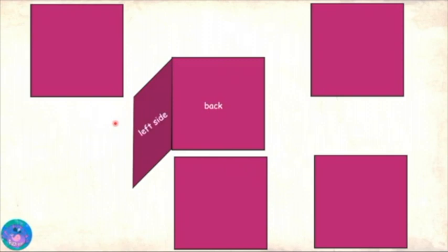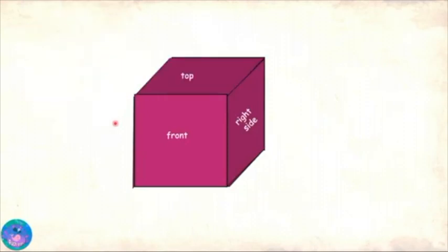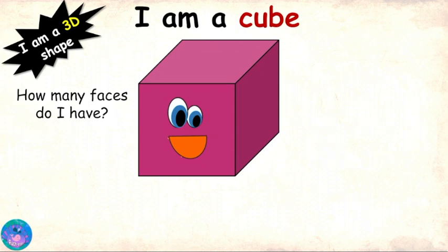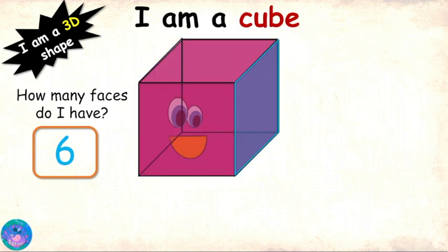Now see how the six faces form my shape: back face, left side face, front face, bottom face, right side face, and a top face. Now I understand — you have six faces, and they are front, back, top, bottom, left side, and right side.